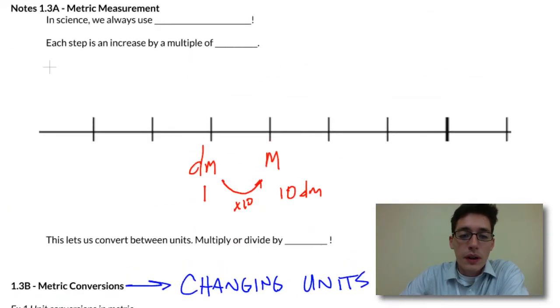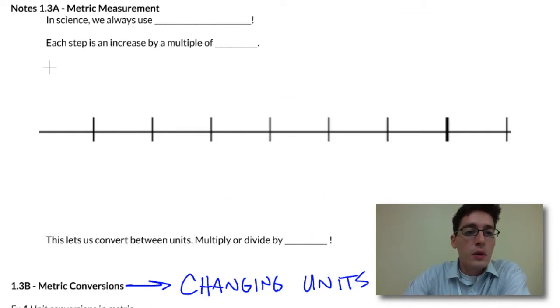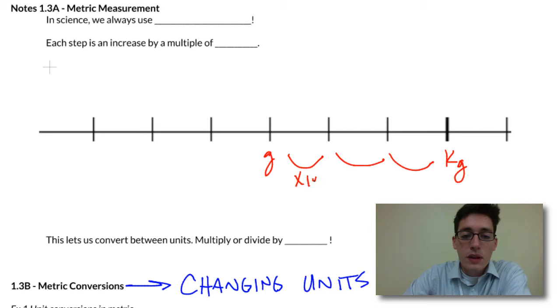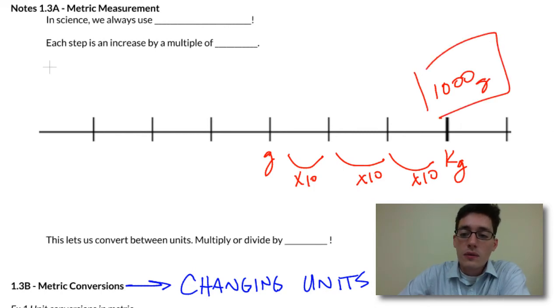Okay, so let's swing back up to this number line. And you should already have this filled in on your notes. So we're going to put grams right here in the middle. And then if you remember your units, kilograms is way up here. So this is 1, 2, 3 steps. So times 10, times 10, times 10, which gives us 1,000 grams. And that's our conversion factor.